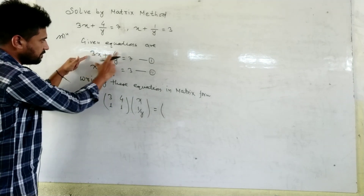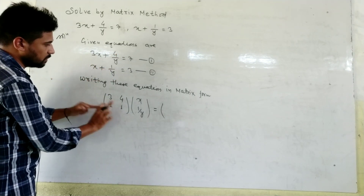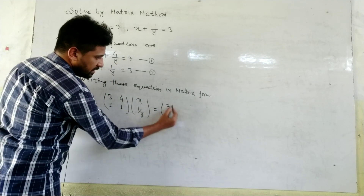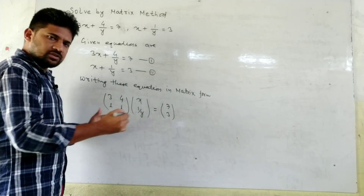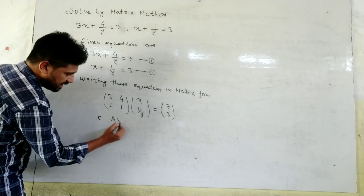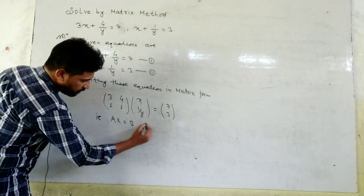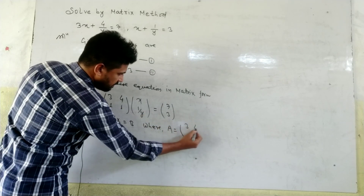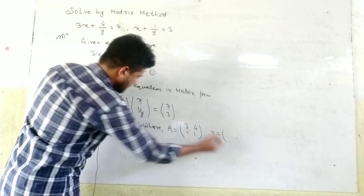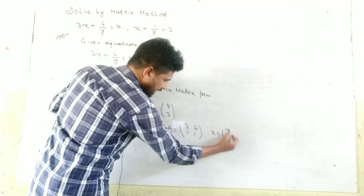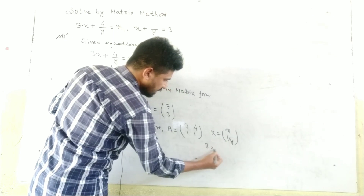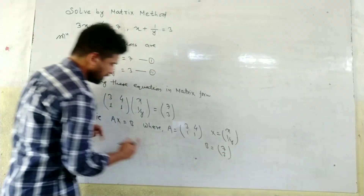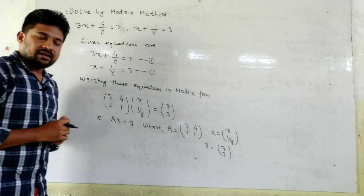The coefficients we write are: matrix A is [3, 4; 1, 1], the variable matrix X is [x; 1/y], and the constant matrix B is [7; 3]. This gives us the form A·X = B, where A = [3, 4; 1, 1], X = [x; 1/y], and B = [7; 3].